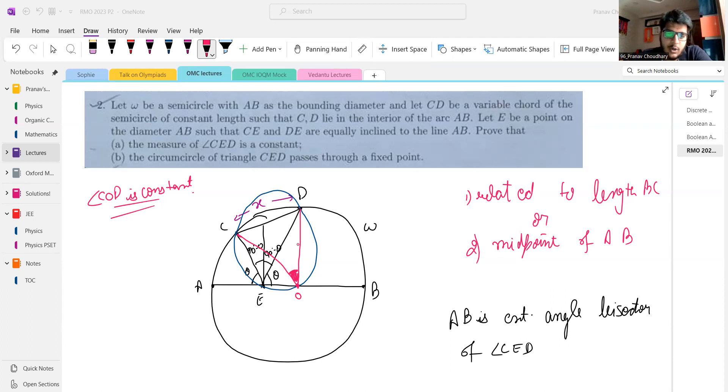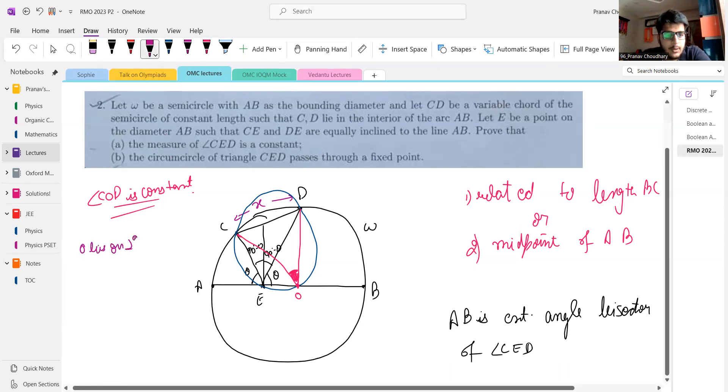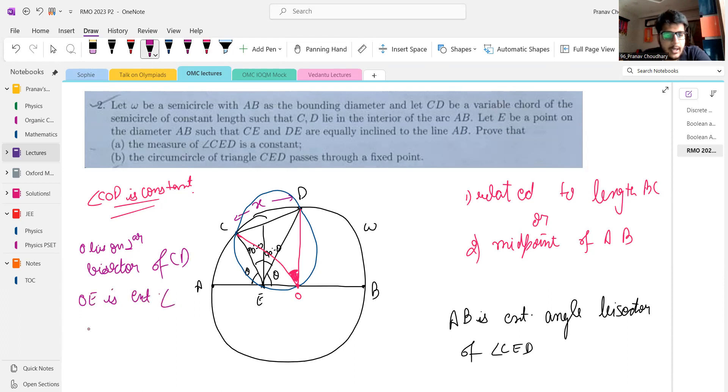Now you see that the lengths CO and DO are equal. So basically O lies on perpendicular bisector of CD and OE is external angle bisector. So O is the intersection of perpendicular bisector and an external angle bisector.